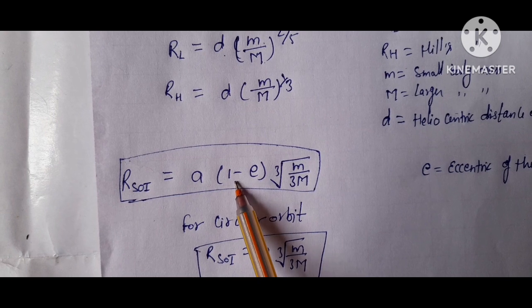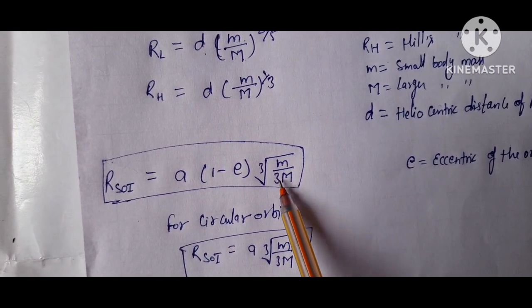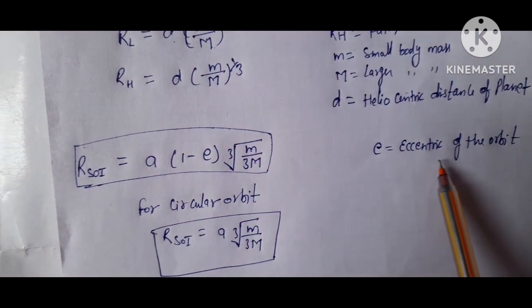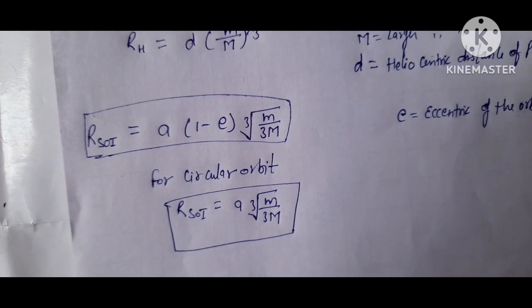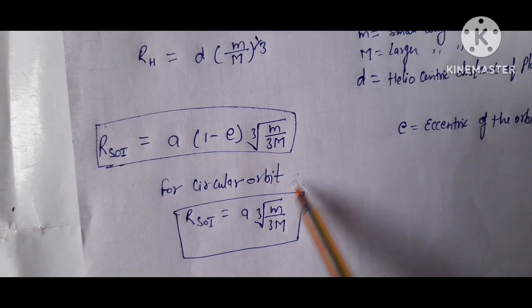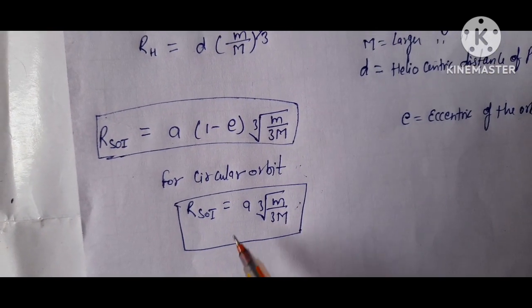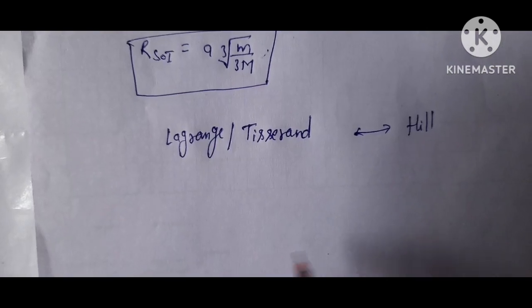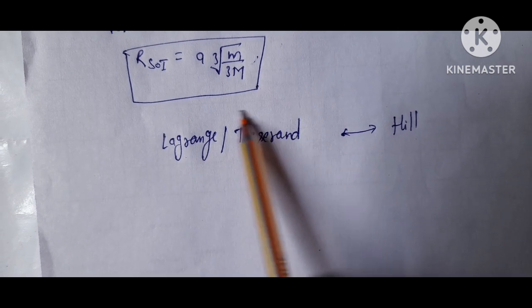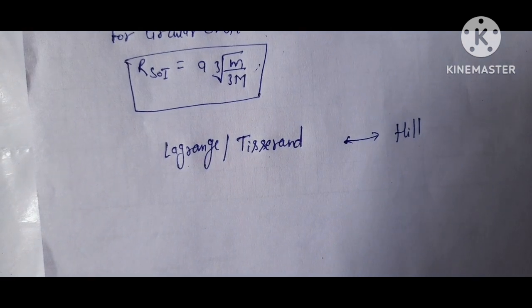So what is the radius of Hills sphere? Radius of Hills sphere equals to A in simple bracket 1 minus E in cubic root is small mass divided by 3 multiplied big mass. And what is E? E is eccentricity of the orbit. If your orbit is circular, then it will come out in this form: radius of Hills sphere equals to this.